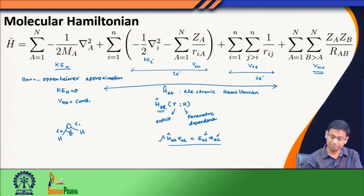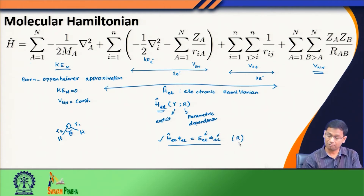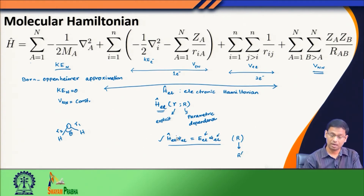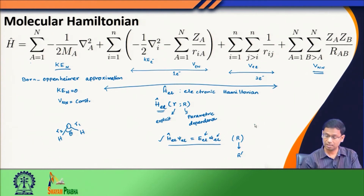The electronic wavefunction ψ_electronic is the eigenfunction corresponding to H_electronic and E_electronic is the corresponding energy value. I have this equation for a fixed value of R — a fixed nuclear configuration. Now if I change the nuclear configuration from R to R′, my solution would also change, giving a different wavefunction and a different energy value.